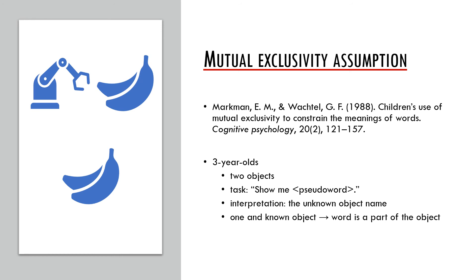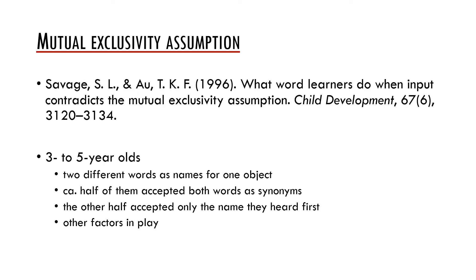The children were told 'show me the...' followed by a pseudoword — always some nonsense syllable. Interestingly, the children showed a significant tendency to choose the unknown object as the referent of the pseudoword. In another experiment, only one object known to the children was used, such as the banana, and in this case the children tended to understand the pseudoword as a name for a part of the object. However, the mutual exclusivity assumption was later contested. Susan Savage and Terry Kitt von Kau ran experiments on three- to five-year-olds using two different words as names for one object, and found that around half of the children actually accepted both words as synonyms, while the other half accepted only the name they heard first.